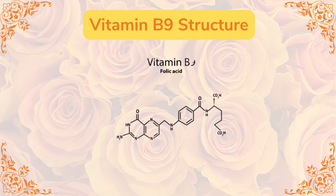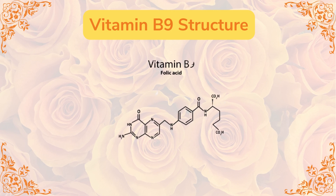Looking at the vitamin B9 structure, you can see there are various groups. There is a carboxylate group, a ketone group, and an amino group. The double bond O represents the ketone group, and the C double O represents the carboxylate group. This is the structure of vitamin B9.